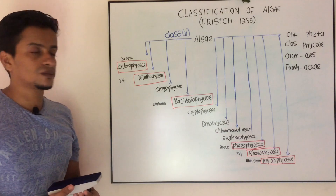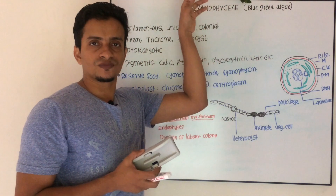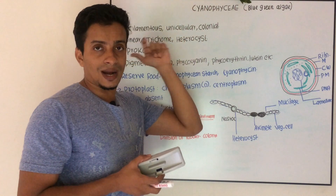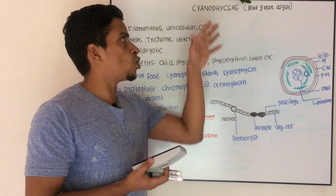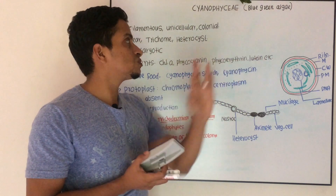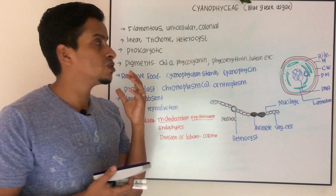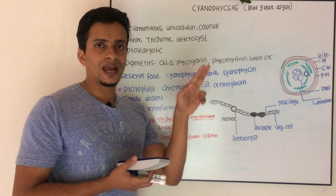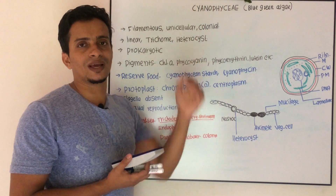Now we are going to discuss the first class of algae, which is Cyanophysiae. Cyanophysiae is commonly known as Blue-Green Algae because of the presence of two pigments: phycocyanin and phycoerythrin. That is why it has a blue-green appearance.